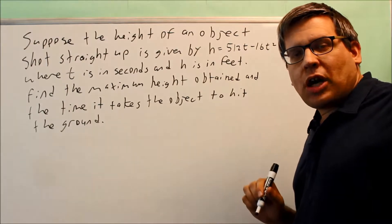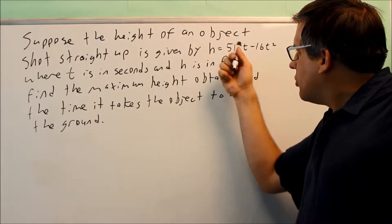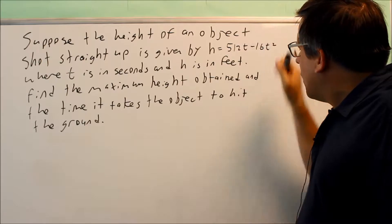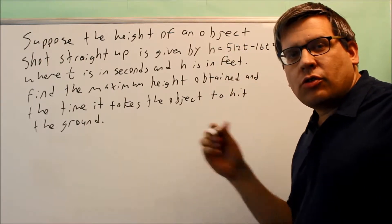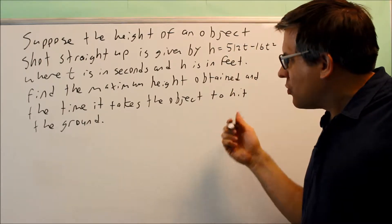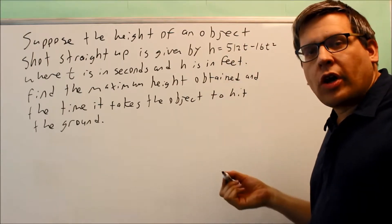The problems we've done so far require you to set up an equation for your quadratic that you would use to find the vertex. This particular one actually gives us the formula already, so we can just go right ahead and find the vertex by using negative b over 2a.